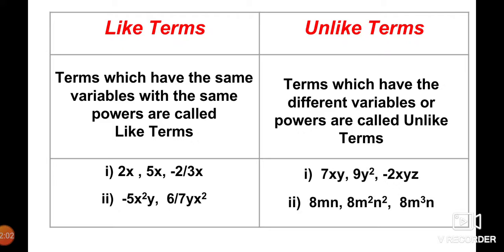See the example of unlike terms: 7xy, 9y², and −2xyz. In these terms, the variables are different and the powers are also different, so they are known as unlike terms.